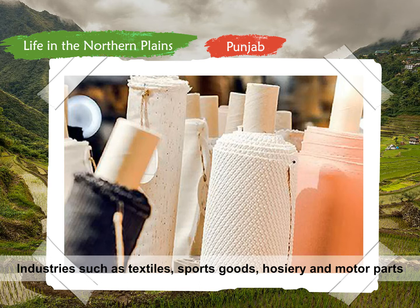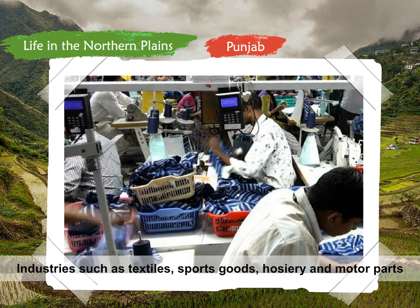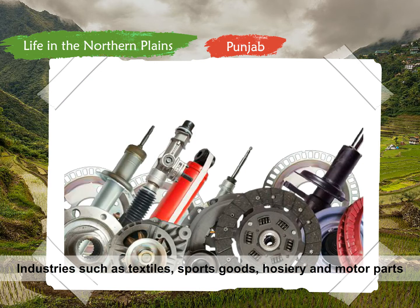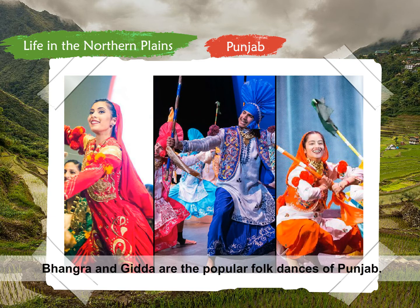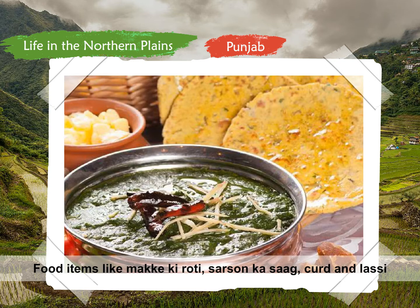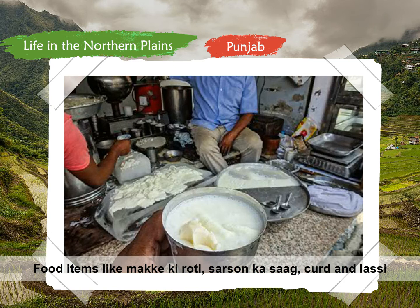Industries such as textiles, sports goods, hosiery, and motor parts are well-developed. Bhangra and Giddha are the popular folk dances of Punjab. Food items like makke ki roti, sarson ka saag, curd, and lassi are very popular among the people of Punjab.